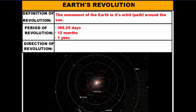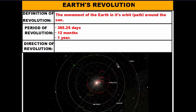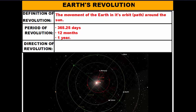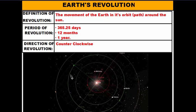Finally, the direction of revolution. The planets move in the opposite direction of clock hands, so the direction of revolution is counter-clockwise. To sum up Earth's revolution: it's the movement of the Earth in its orbit around the Sun, taking one year — 12 months or 365 and a quarter days — and the direction is counter-clockwise. That concludes our lesson on rotation and revolution of the Earth. Thanks for tuning in.